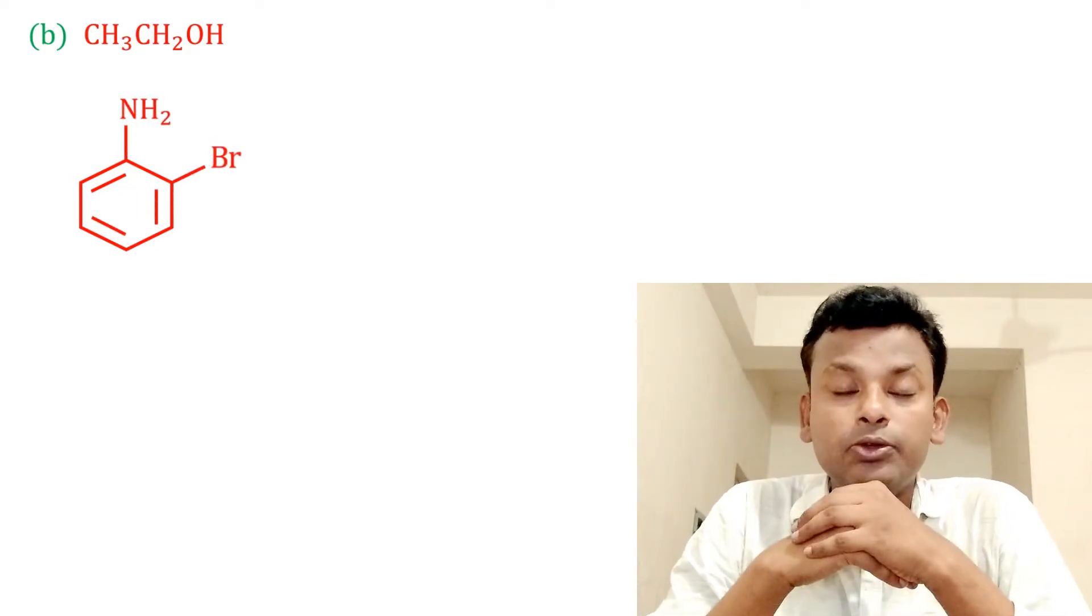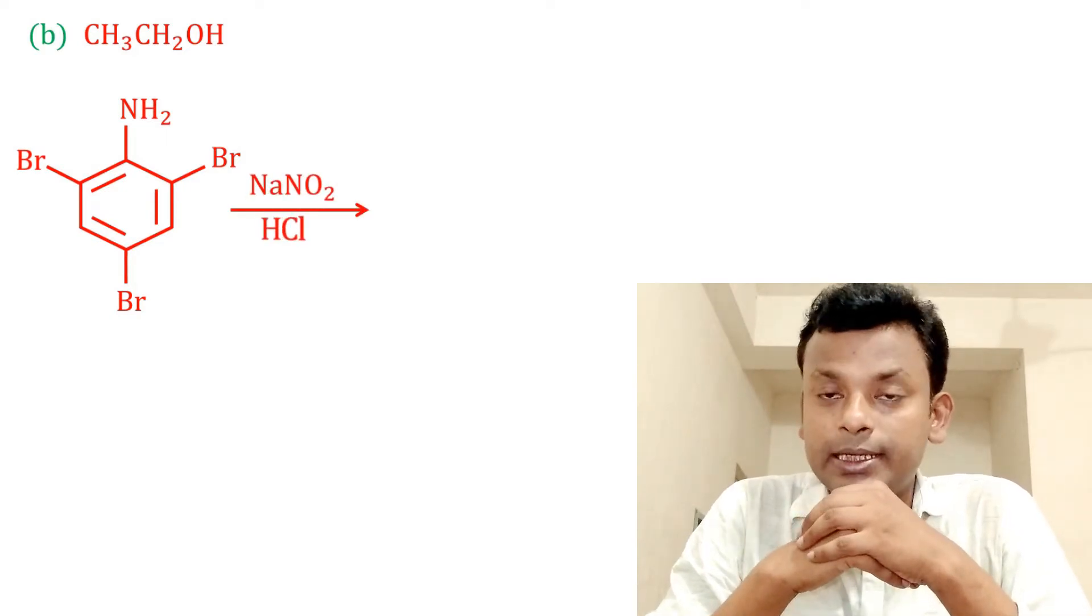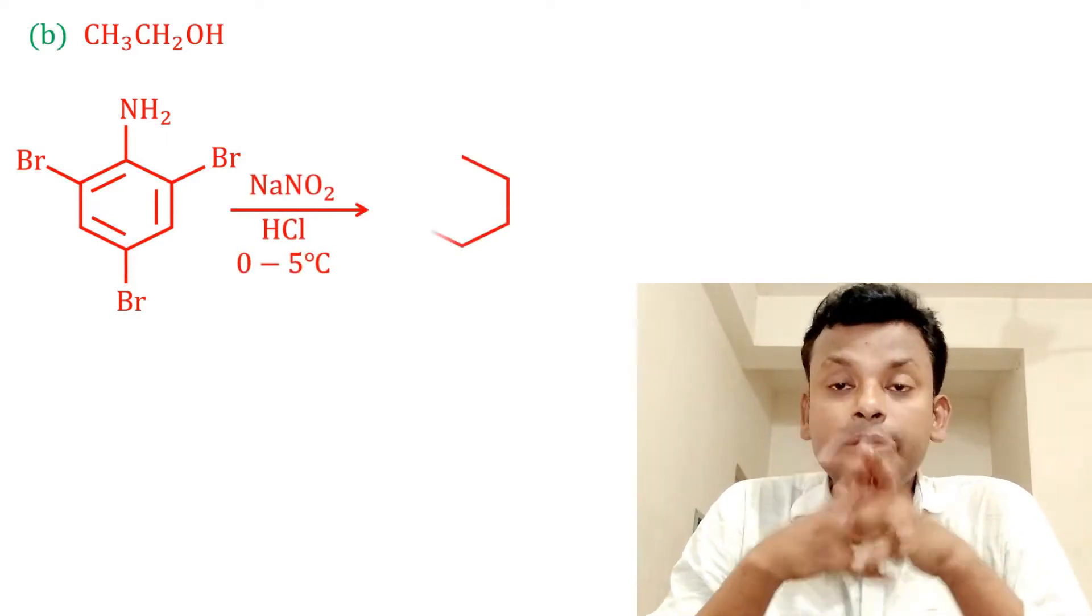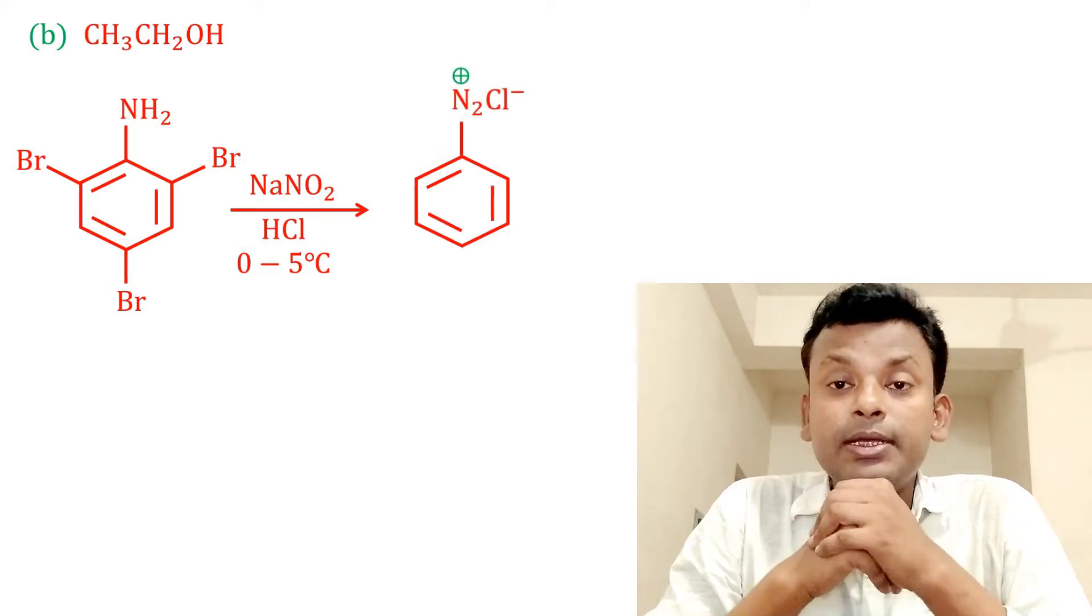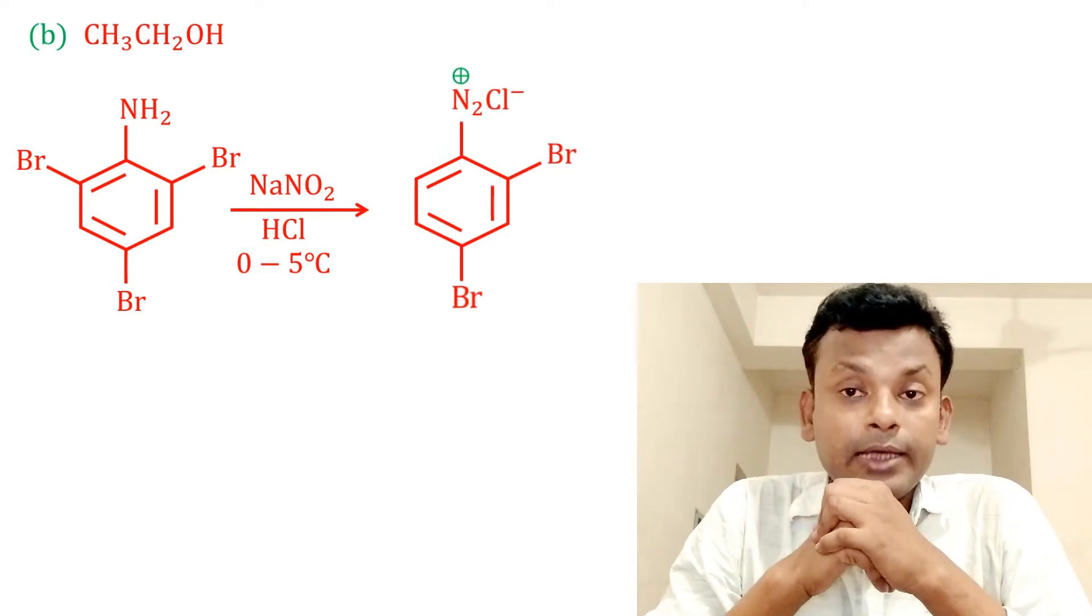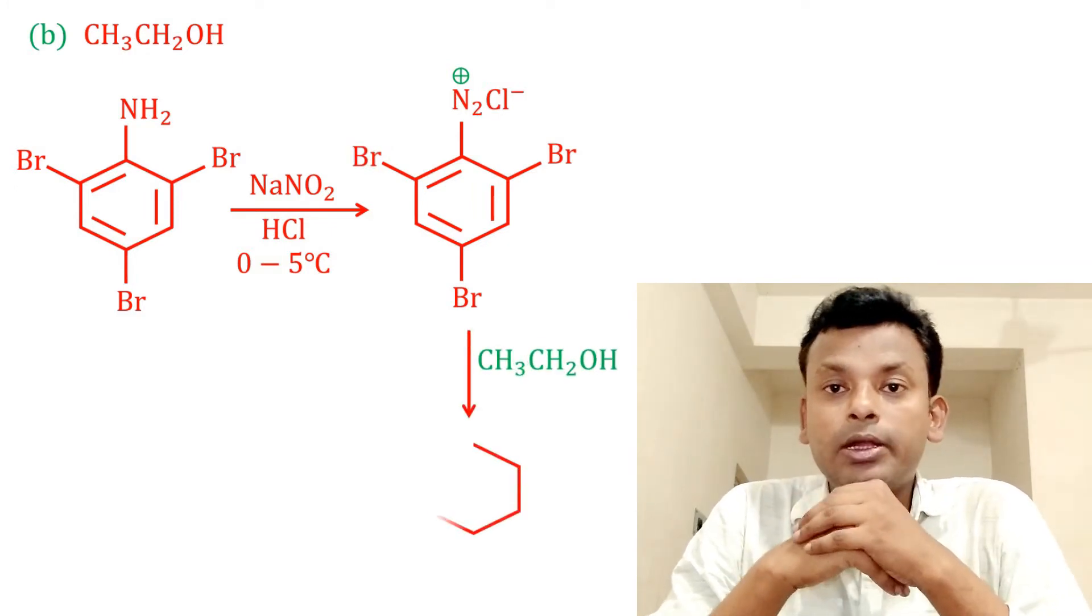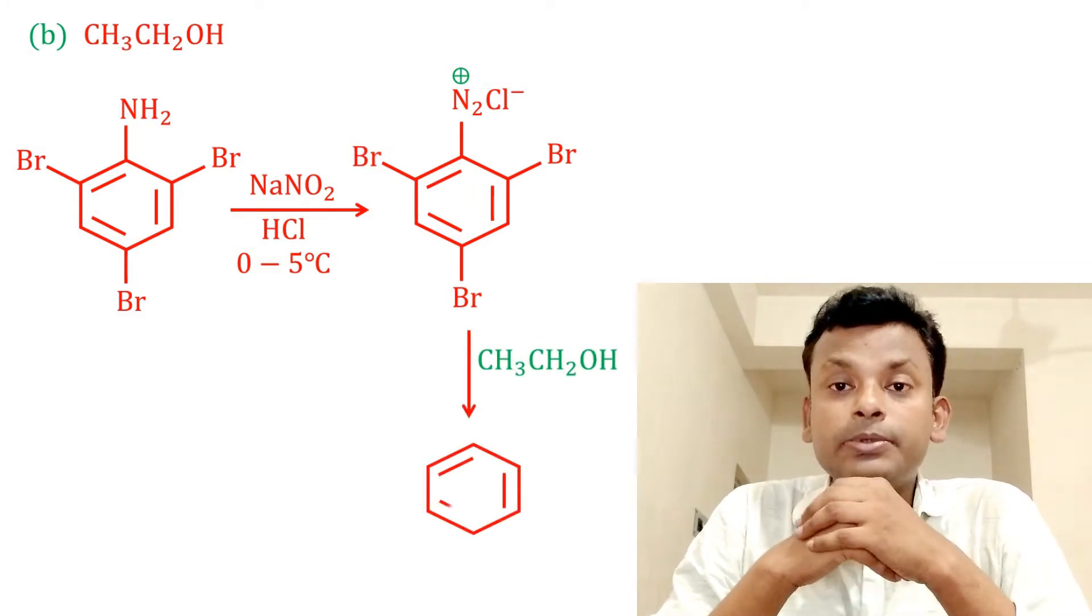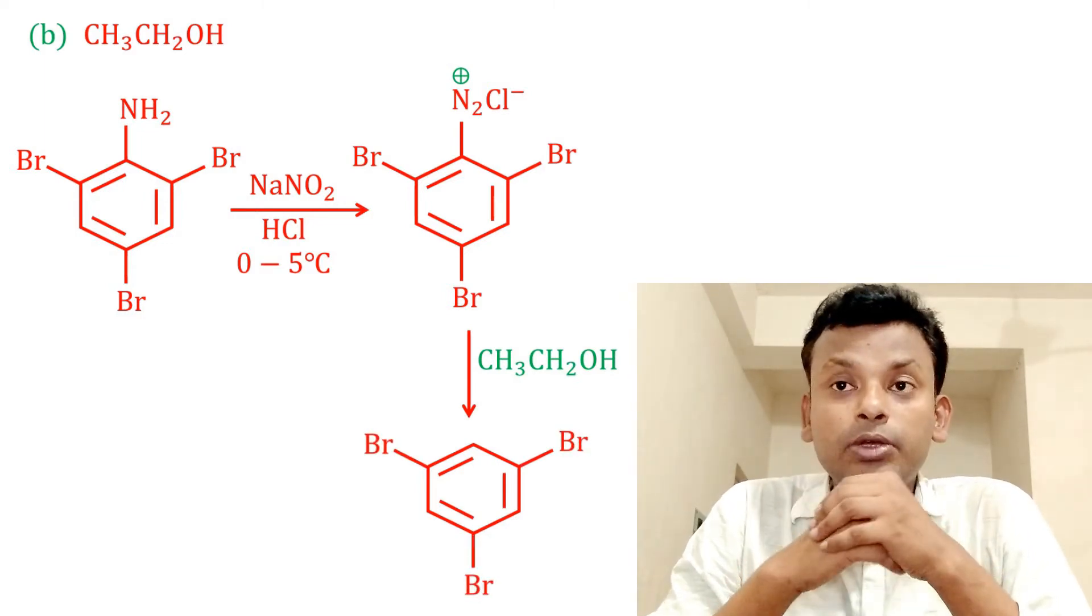2,4,6 tribromoaniline reacts with NaNO2 and HCl at 0 to 5 degree centigrade temperature gives diazonium salt. Here, this step is known as diazotization. And we know that diazonium salt reacts with alcohol gives benzene. Here also same: diazonium salt reacts with ethanol forms this final product.